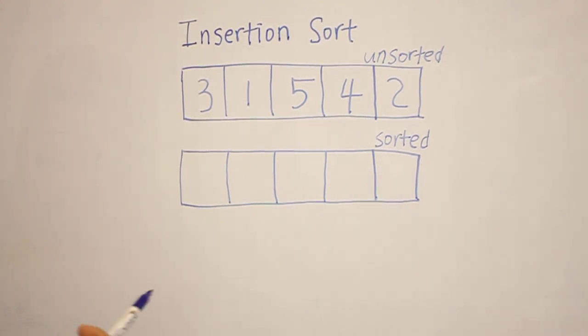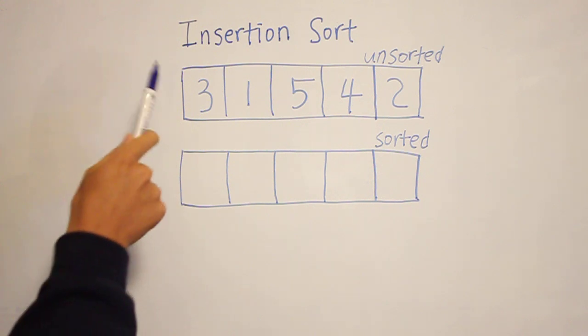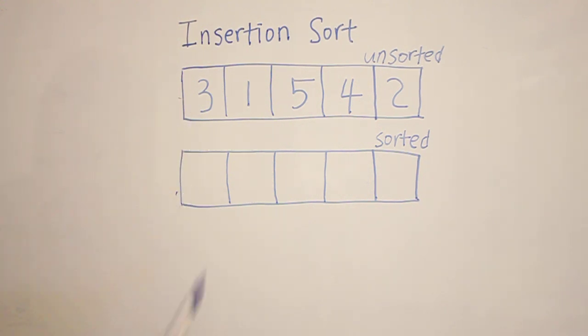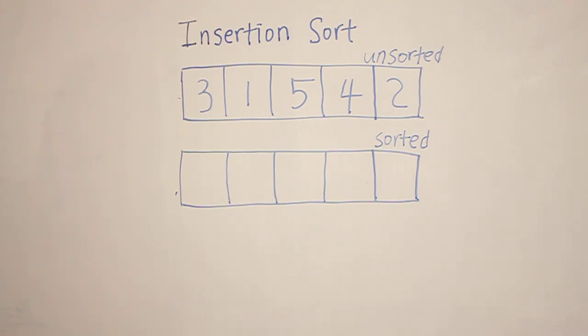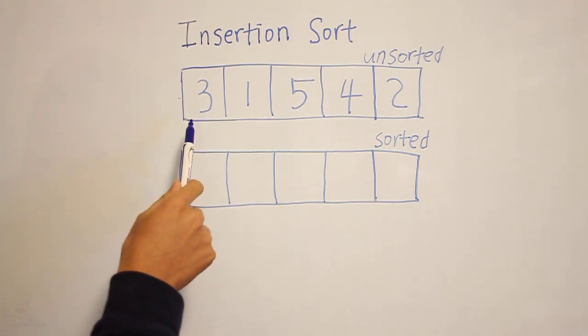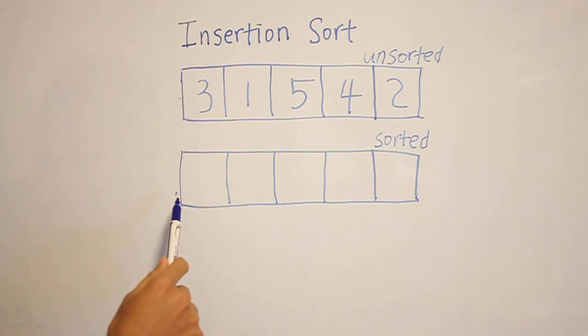When you want to write a computer program that rearranges this unsorted array to a sorted array, insertion sort is one of the most simplest algorithms that you can use. The basic idea here is you take one element at a time and try to put it in the sorted array in the correct order.